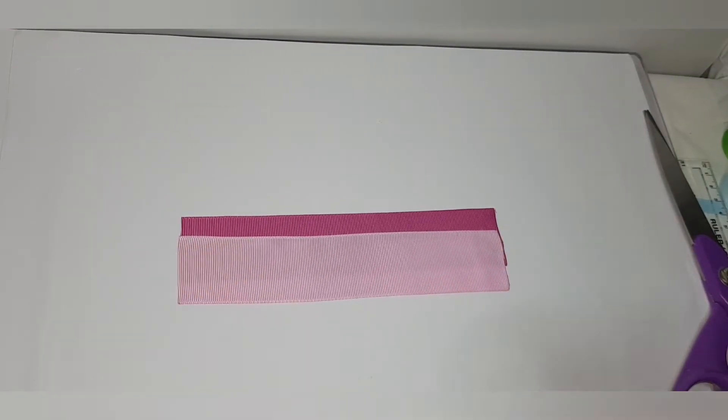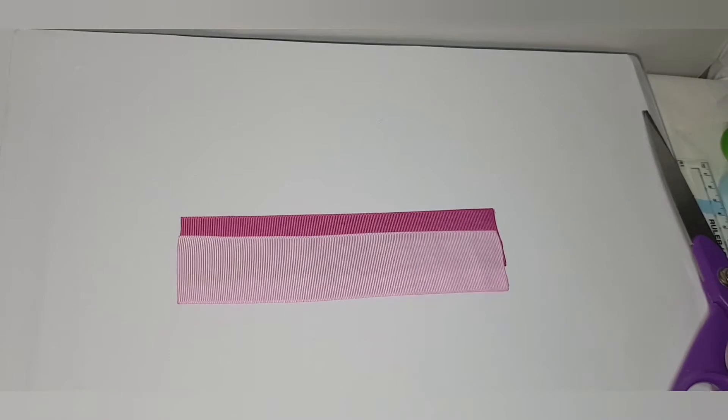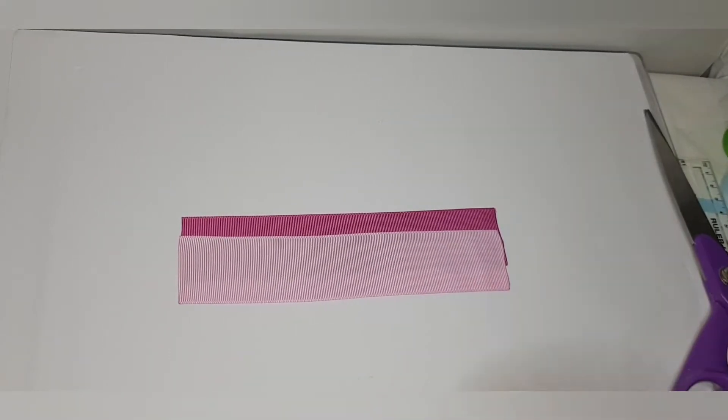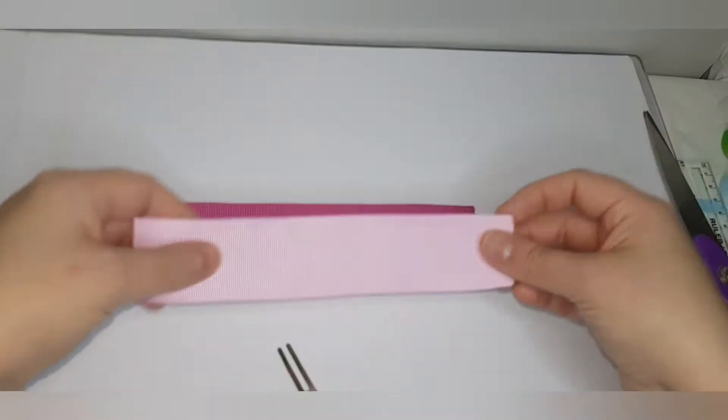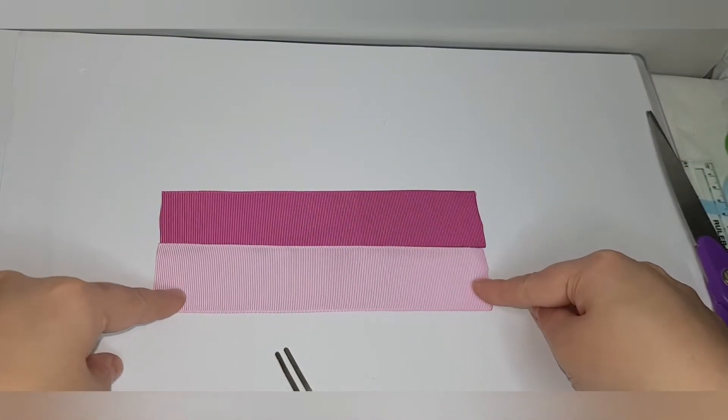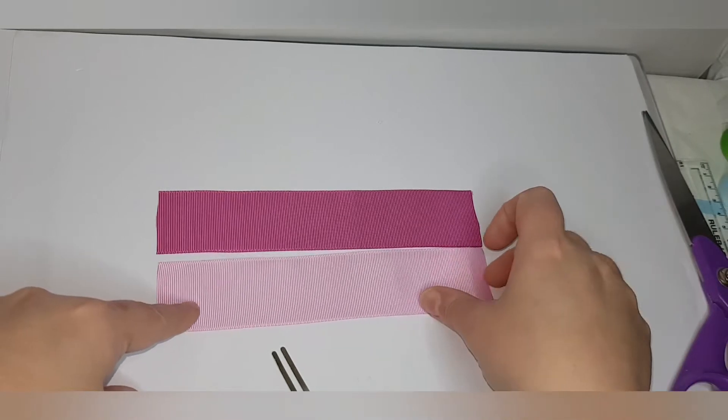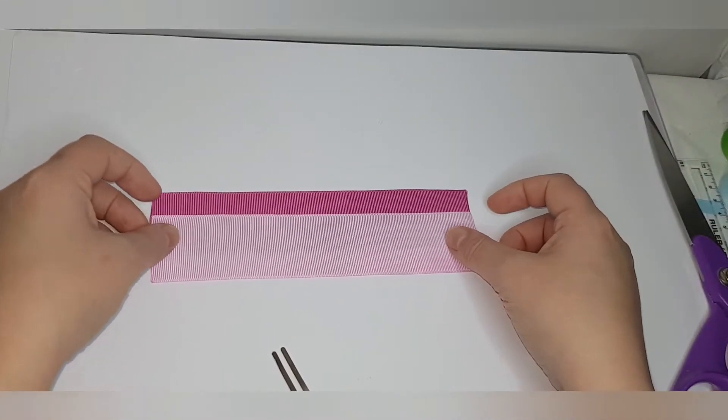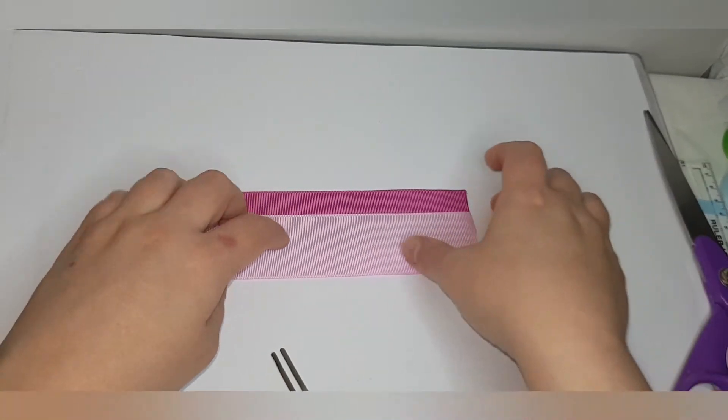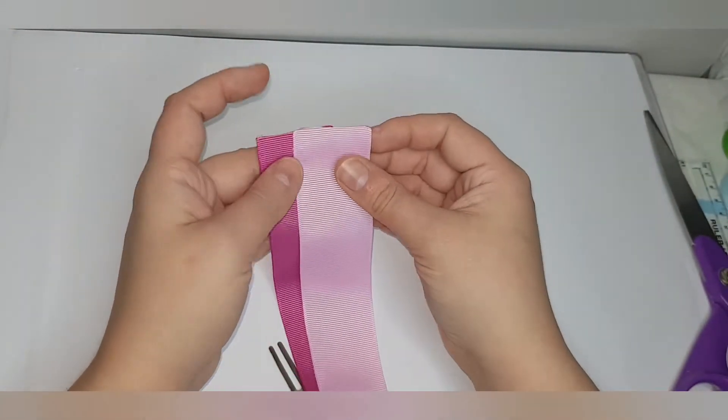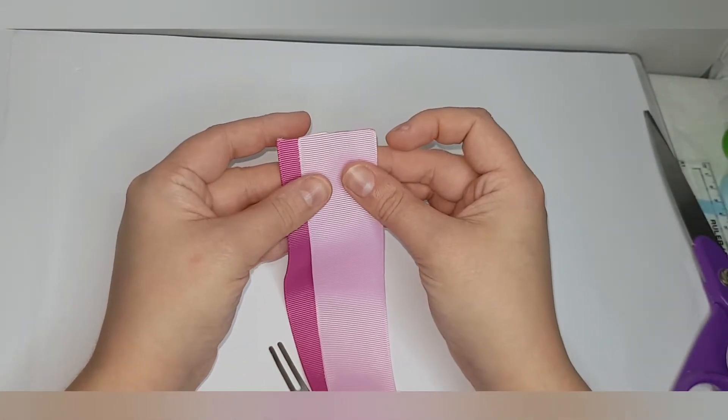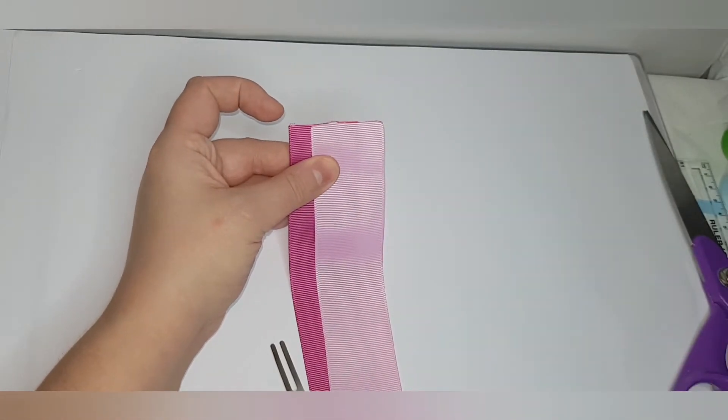I've already got my ribbon ready to go, getting more organized now. These are the two pieces of 19 centimeters or seven and a half inches and I will put up the other sizes once I've worked all of those out. They should be pretty similar to standard tux bow sizes.